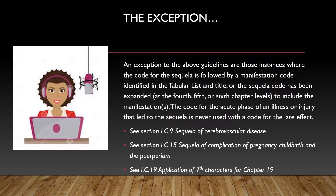The exception to the sequela coding guideline covers those instances where the code for the sequela is followed by a manifestation code identified in the tabular list and title, or the sequela code has been expanded at the fourth, fifth, or sixth chapter levels to include the manifestation or manifestations. The code for the acute phase of an illness or injury that led to the sequela is never used with a code for the late effect.